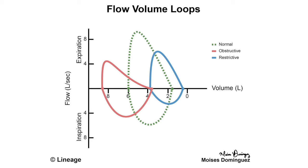Finally, let's look at flow volume loops — a plot of inspiratory and expiratory flow on the y-axis against volume of air on the x-axis, during maximally forced inspiratory and expiratory maneuvers. For the normal curve, we ask the patient to inspire maximally, plotting the flow — volume increases from around 2 to 6 liters — then a forceful expiration plots expiratory flow, which slowly comes down.